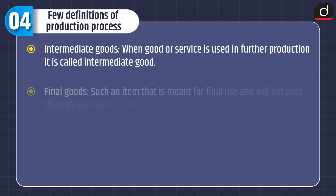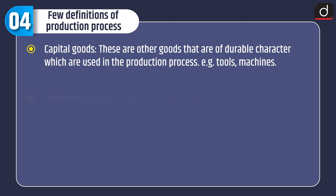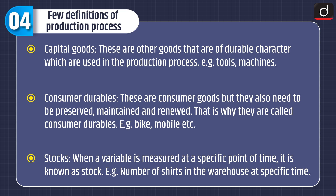Now let's have a look at some definitions of production process. First is intermediate goods — when a good or service is used in further production, it is called an intermediate good. Final goods — an item that is meant for final use and will not pass through any more stages of production or transformation is called a final good. Consumption goods — goods like food and clothing and services like recreation that are consumed when purchased are called consumption goods. Capital goods — these are other goods that are of durable character which are used in the production process, for example tools and machines. Consumer durables — these are consumer goods but they also need to be preserved, maintained and renewed, that is why they are called consumer durables, for example bike, mobile, etc.